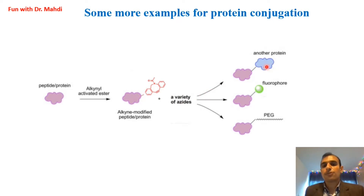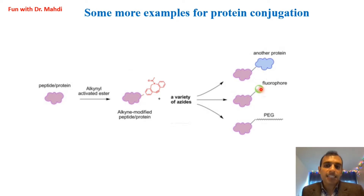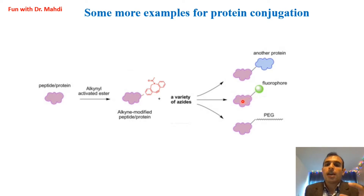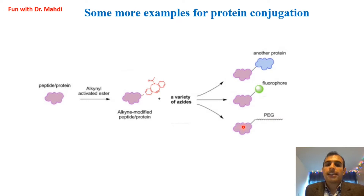For example, we can have protein-protein conjugation: in the structure of the second protein we need an azide group, and after the click reaction we have a protein-protein conjugate. If we would like to have a fluorescent protein, we use TAMRA-azide — it has an azide group and is fluorescent — and after the click reaction between the fluorescent dye and the cycloalkyne in the protein, we have a fluorescent protein conjugate. We can also attach PEG: using azide-PEG, after the click reaction between the azide in PEG and the cycloalkyne in the protein, we have a protein-PEG conjugate.